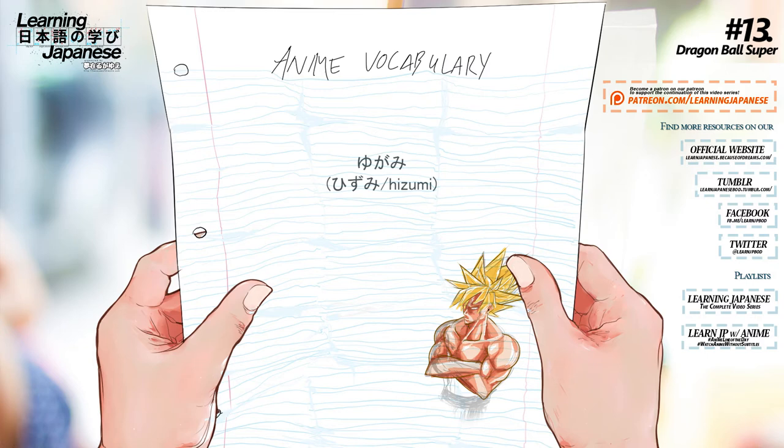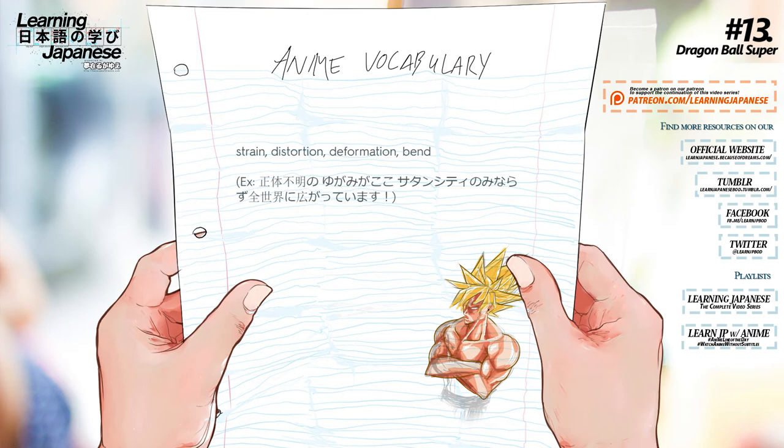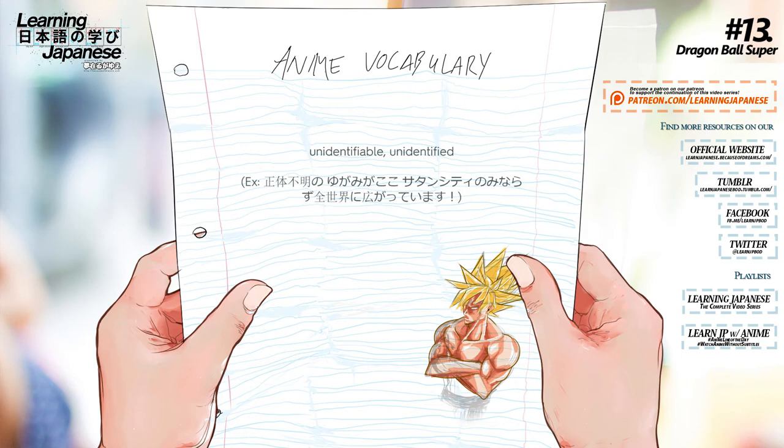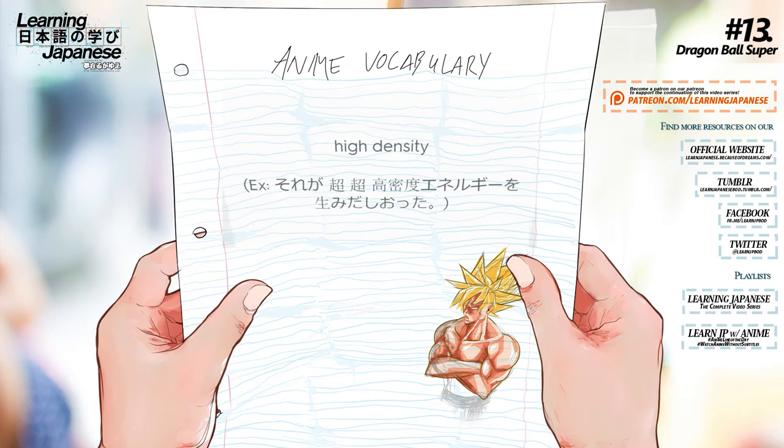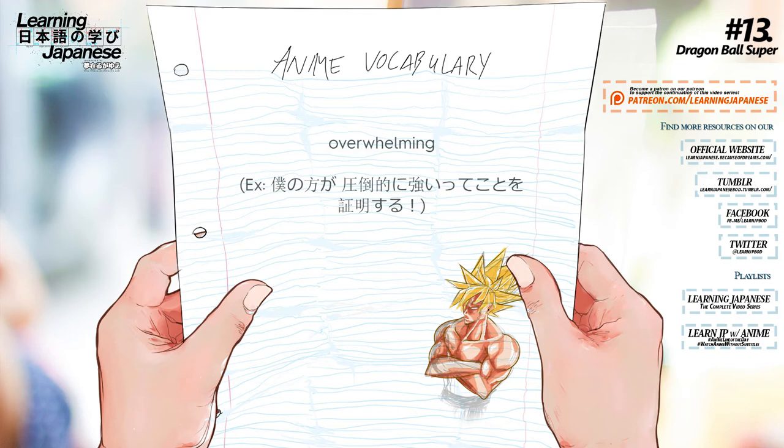歪み — Strain, distortion, deformation, bend. 正体不明 — Unidentifiable, unidentified. 証明 — Proof, verification, certification.